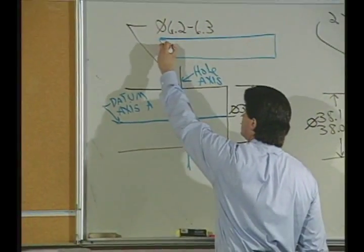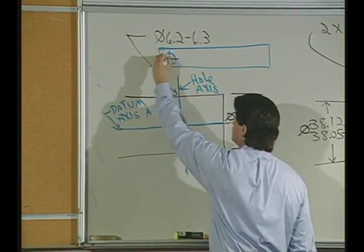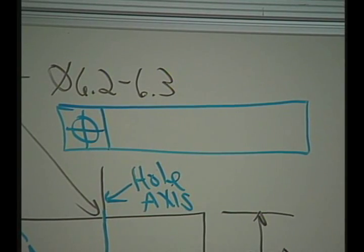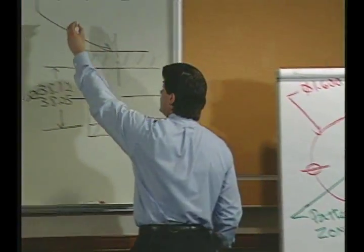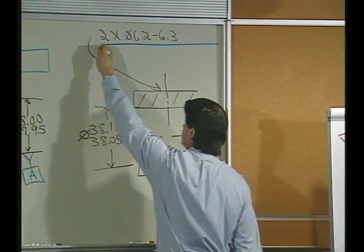So inside this feature control frame, let's all write a positional control. And certainly what you do to one you do to the other, so over here on the other one it would get its own positional control.